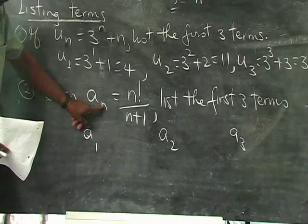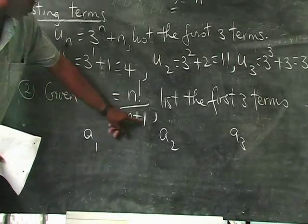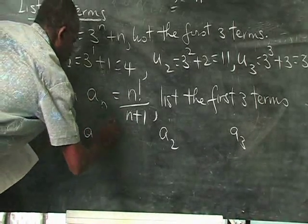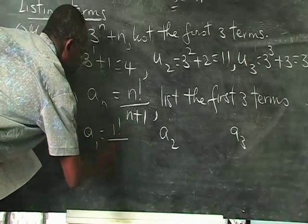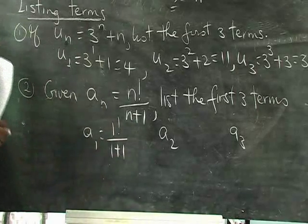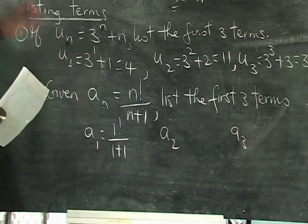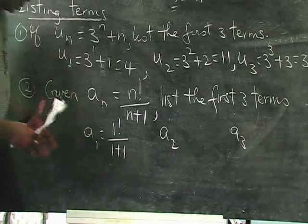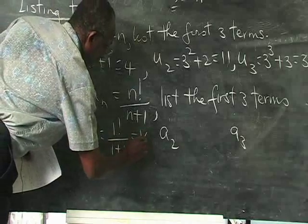A1 would mean that N becomes 1. So when N becomes 1, we have 1 factorial over 1 plus 1. You will know that you can get the values of factorial on your calculator. So 1 factorial is simply 1. 1 plus 1 would give you 2. The answer would be a half.